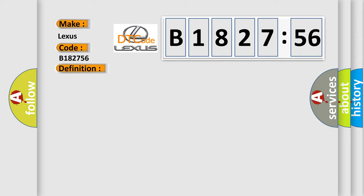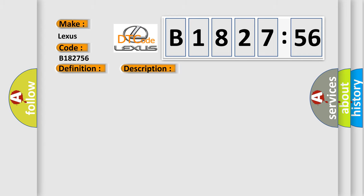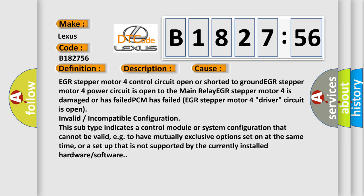EGR stepper motor 4 circuit malfunction. And now this is a short description of this DTC code. Key on or engine running and PCM detected an unexpected voltage condition on the EGR stepper motor 4 circuit during the CCM test.